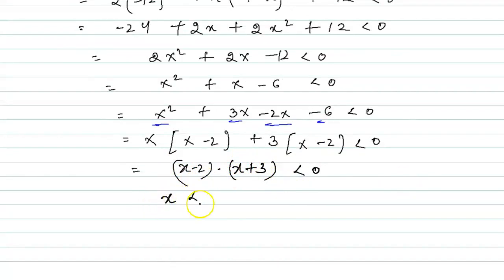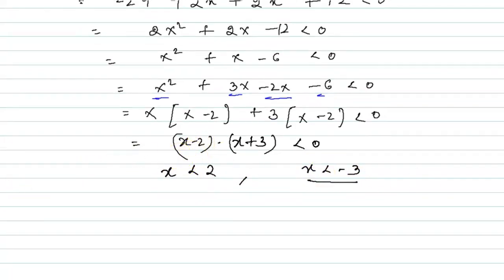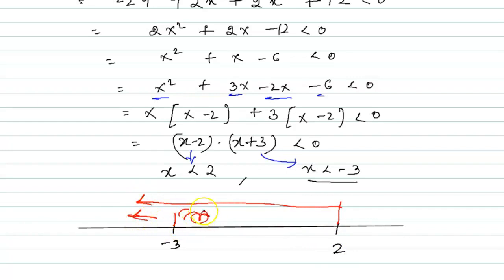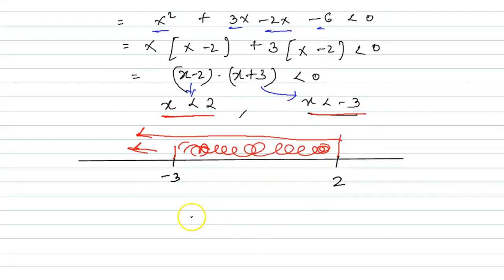Factoring: x² + 3x − 2x − 6 < 0 → x(x + 3) − 2(x + 3) < 0 → (x − 2)(x + 3) < 0. The two critical points are x = 2 and x = −3. Drawing the number line, the common region gives x ∈ (−3, 2). This is our final answer.